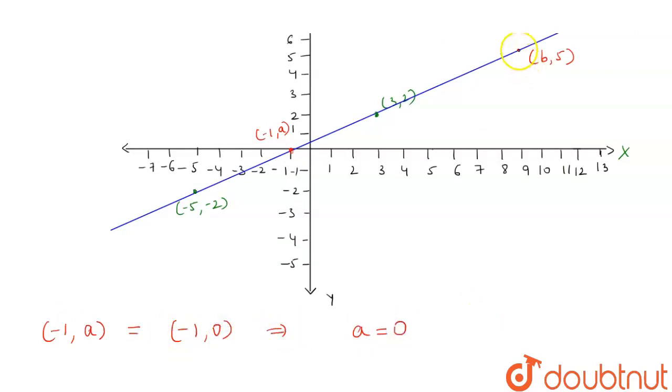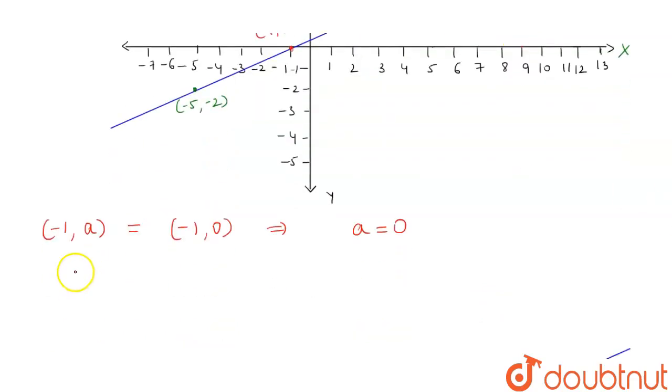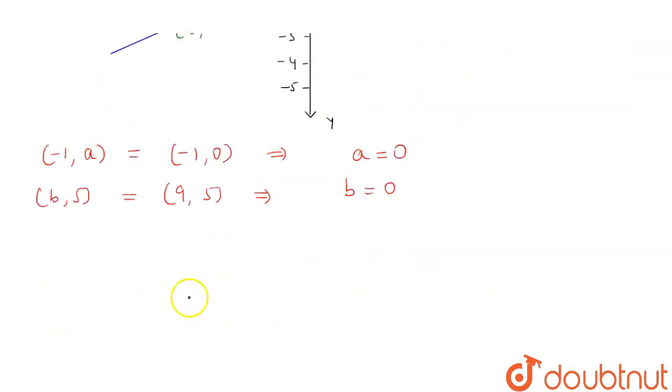And this point b, we see that if we extend this here it will be 9. So we will get the value of b, 5 to be equal to 9, 5. From here we will get the value of b to be 9. Now we are to find the relation between x and y.